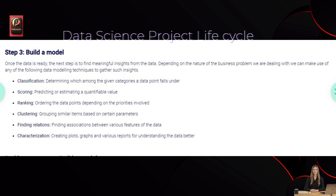Step 3: Build a model. Once the data is ready, the next step is to find meaningful insights from the data. Depending on the nature of the business problem, we can make use of the following data modeling techniques: Classification — determining which category a data point falls under. Scoring — predicting or estimating a quantifiable value. Ranking — ordering data points depending on priorities. Clustering — grouping similar items based on certain parameters. Finding relations — finding associations between various features of the data.